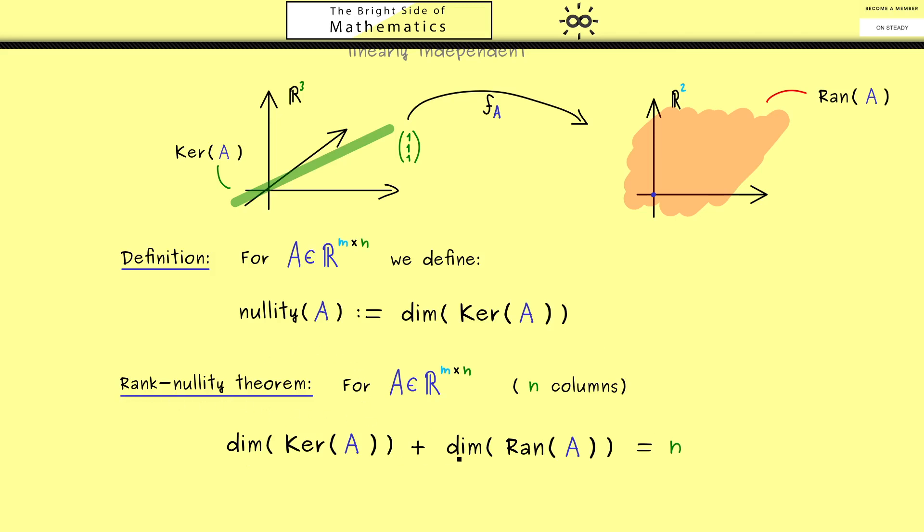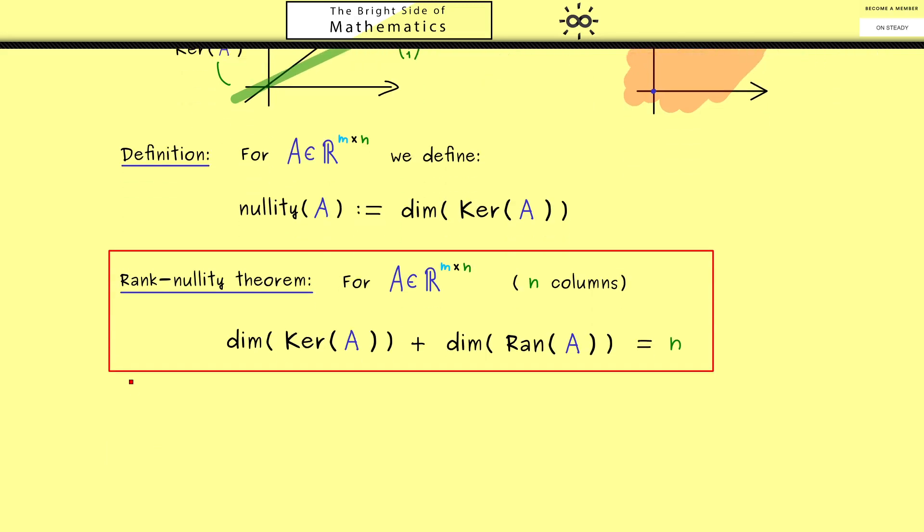It tells you if you have one dimension, you can easily calculate the other one. So you see, this is a very important fact and we will use this a lot in linear algebra. And therefore, I think you are also interested in a proof of it. In fact, this is not so hard because we already know a lot about dimensions.